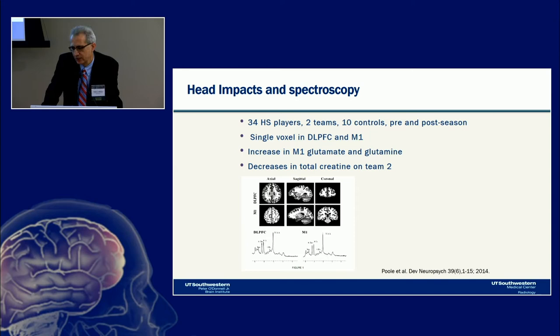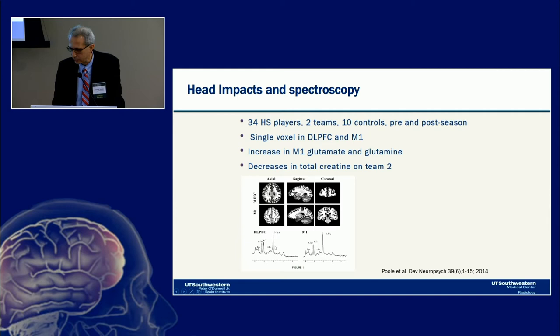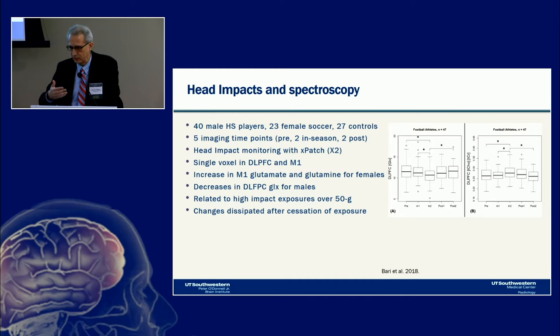MR spectroscopy can be used to measure metabolite concentrations in the brain. A 2014 study by Poole et al. examined 34 high school players, two teams, and 10 controls, looking pre- and post-season at the dorsolateral prefrontal cortex and motor areas. They found an increase in motor glutamate and glutamine and decreases in total creatine between post- and pre-season for one team — indicating spectroscopic or metabolite changes in the brain associated with subconcussive impacts.